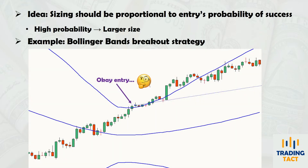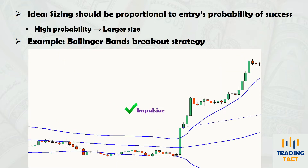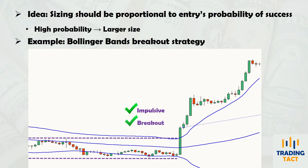Suppose you have a regular Bollinger Bands breakout strategy that enters the market when prices close outside the Bands. What if this move is accompanied by an impulsive bar and a breakout of a prior trading range? These signals point to higher probability trades. If you could go big when such signals occur, you could increase your number of outsized wins. Sounds logical, but does it work over the long term?